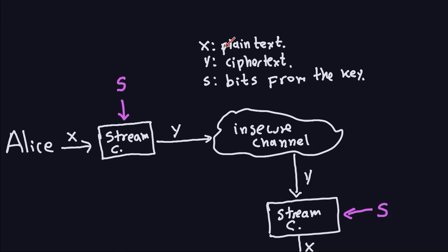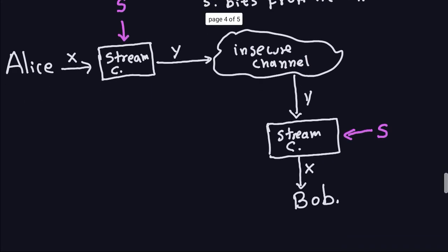So the whole picture here will be: you have plain text called x, y is the cipher text, and s is the bits from the key. Remember, these bits are not the binary representation of the key. x comes in here - which is the letter A or the binary representation of the letter A - you XOR it with the bits, out comes the cipher text, it goes through the insecure channel to Bob. But of course Bob has to decrypt it, so he has to use a stream cipher again.